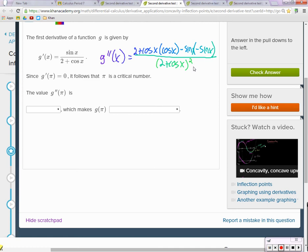So this is multiplied together, so we have 2 cosine x plus cosine squared x plus sine squared x.